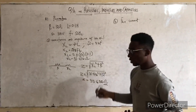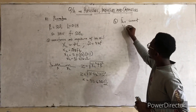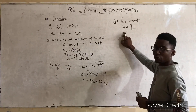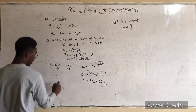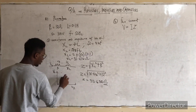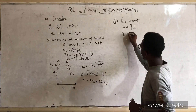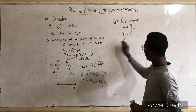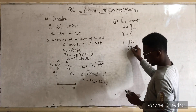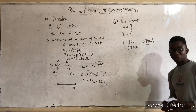Part (b) of the question asks us to find the current. We know that V = I × Z, so the current I = V/Z = 100 divided by 33.630, which gives us 2.934 amperes.